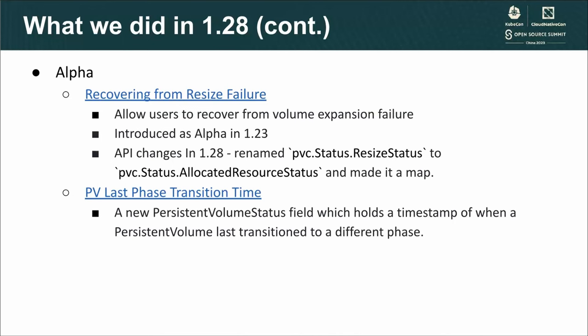In 1.28, we also added a PV last phase transition time alpha feature. With this change, now in the persistent volume status, we have this lastPhaseTransitionTime field. It holds a timestamp of when the volume last transitioned to its phase. And for newly created volumes, this phase is set to pending and the last phase transition time is set to the current time.